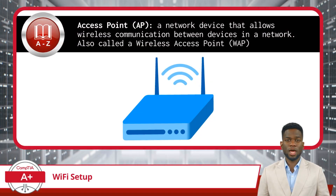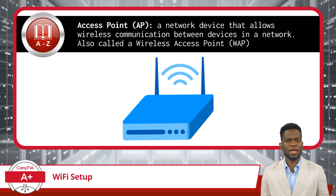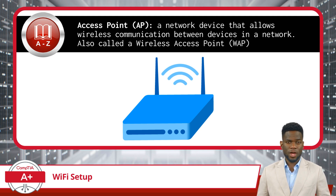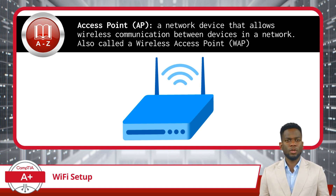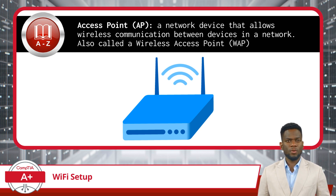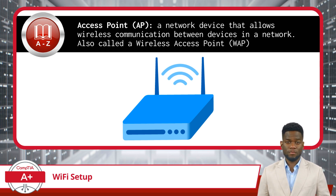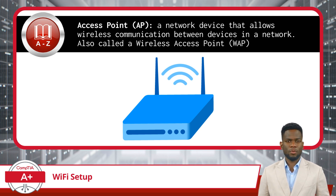Before we jump into this topic, let's briefly talk about the access point, or AP. An access point, also called a wireless access point, is a network device that allows wireless communications between devices in a network. It connects Wi-Fi-enabled devices, such as laptops or smartphones, to the network. Access points are used to provide wireless connectivity in homes, offices, and public spaces, enabling mobility and flexibility in network access.